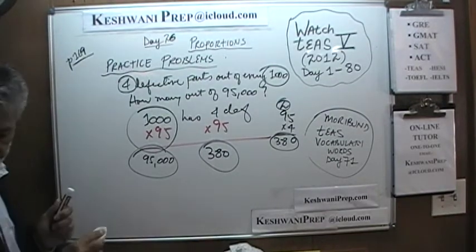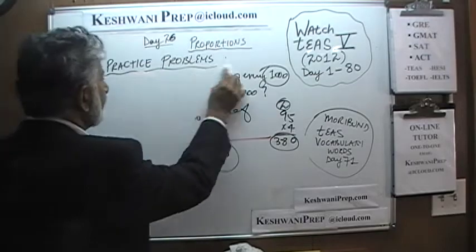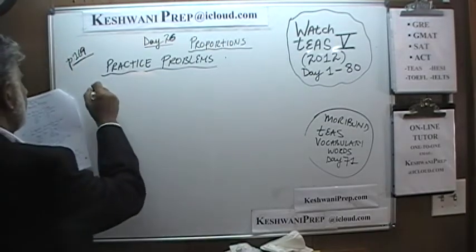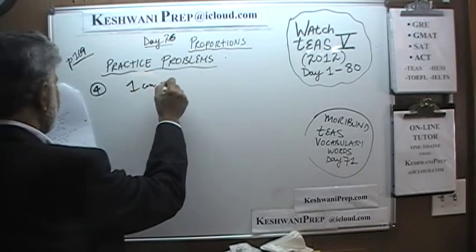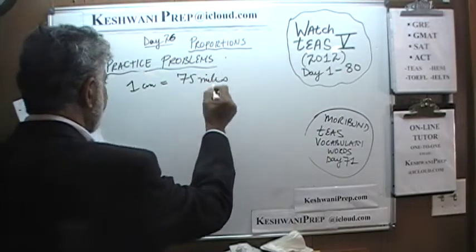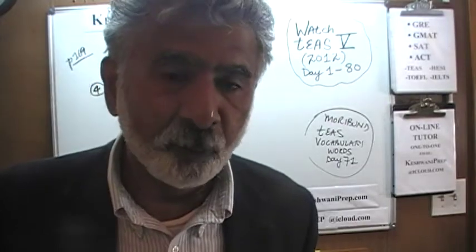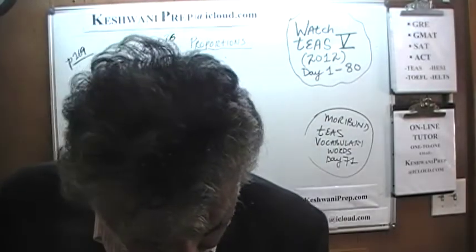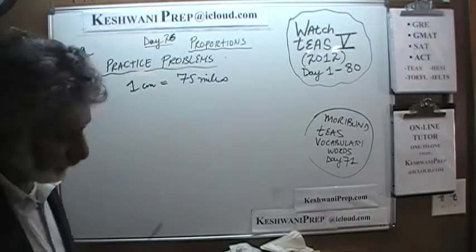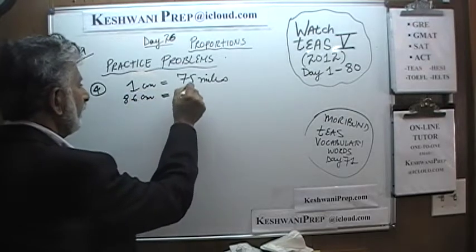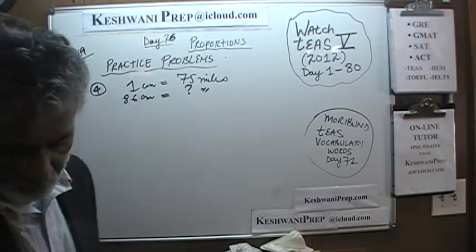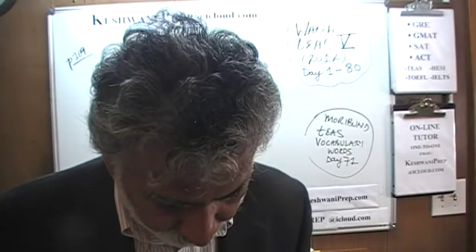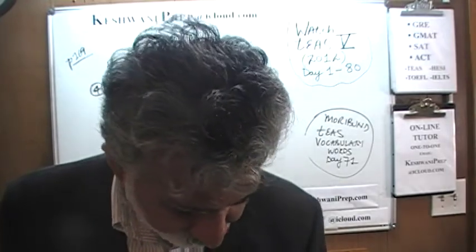Let's do the next one — number 4. We are told that 1 cm equals 75 miles. Apparently we are looking at a map. The scale is 1 cm equals 75 miles. The question is, if you are looking at 2 cities on the map which happen to be 8.6 cm apart, how many miles is that — how many miles apart are they in reality? I am turning my page because we did a problem very similar to this one yesterday, the very first one on page 168.